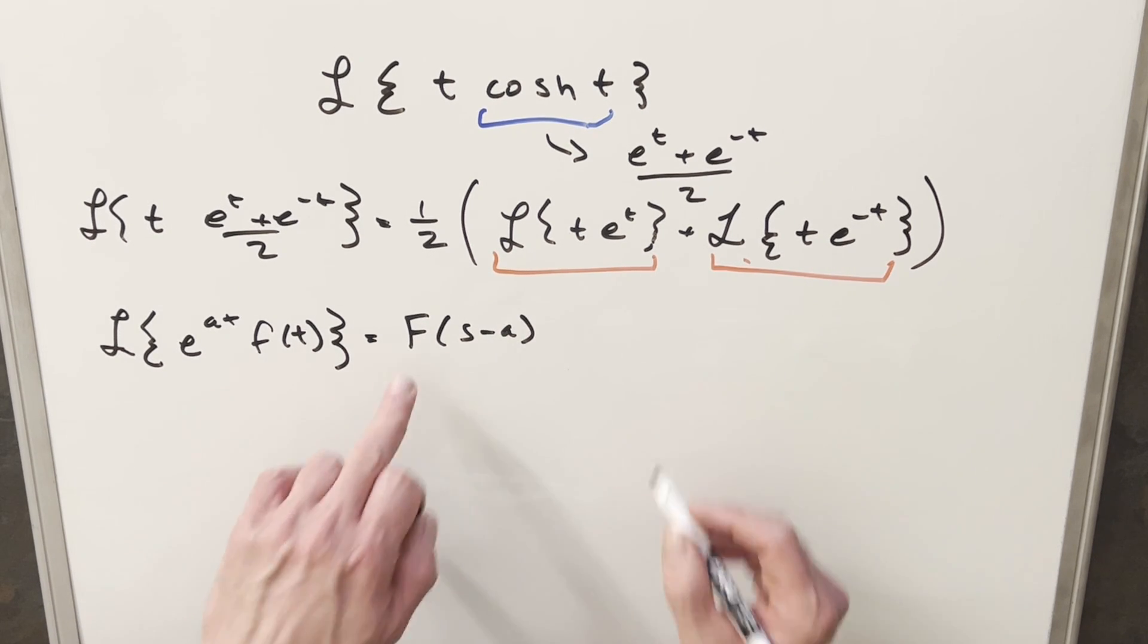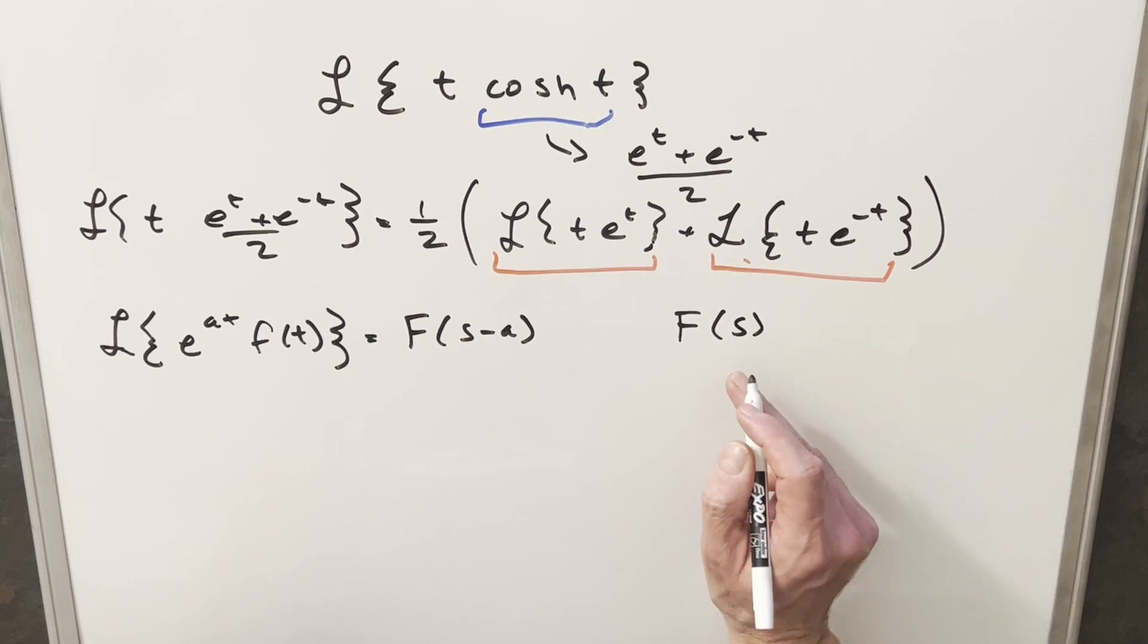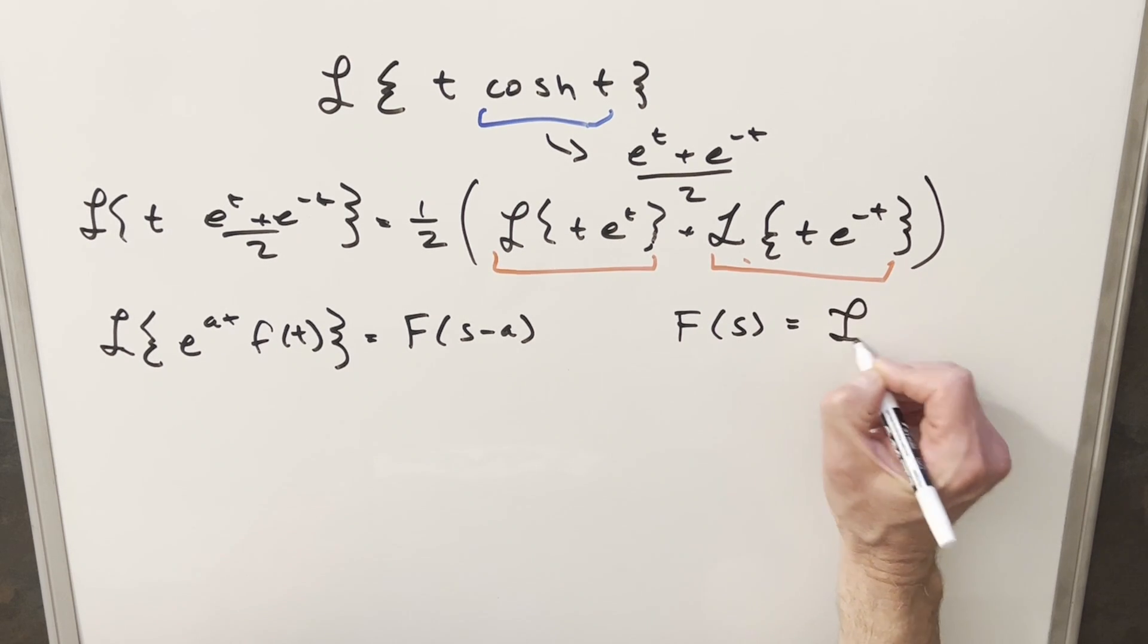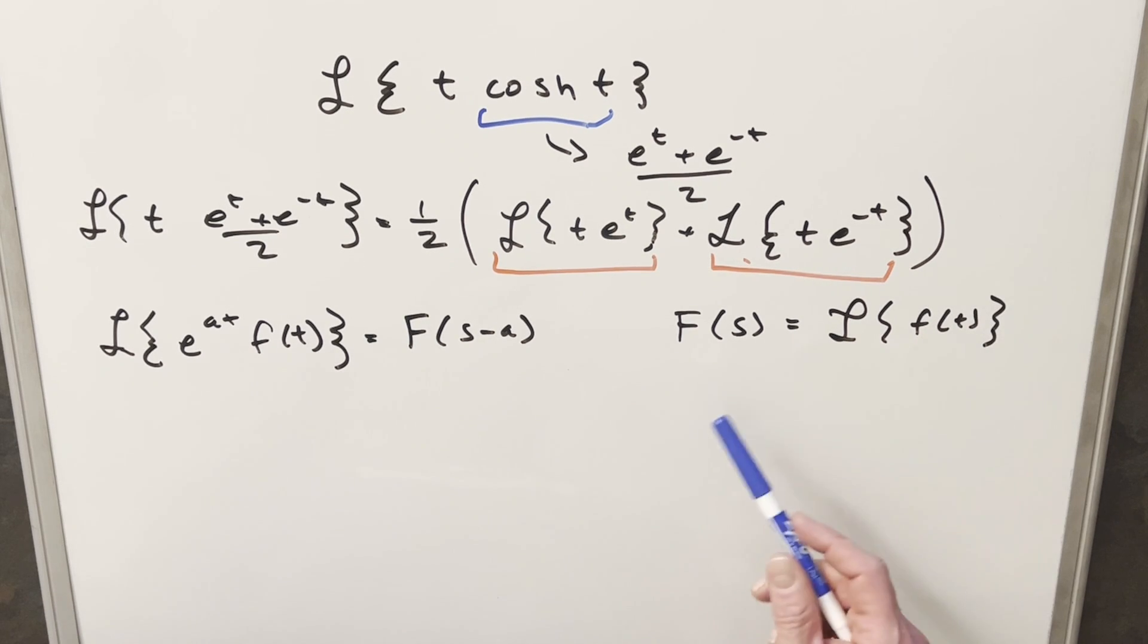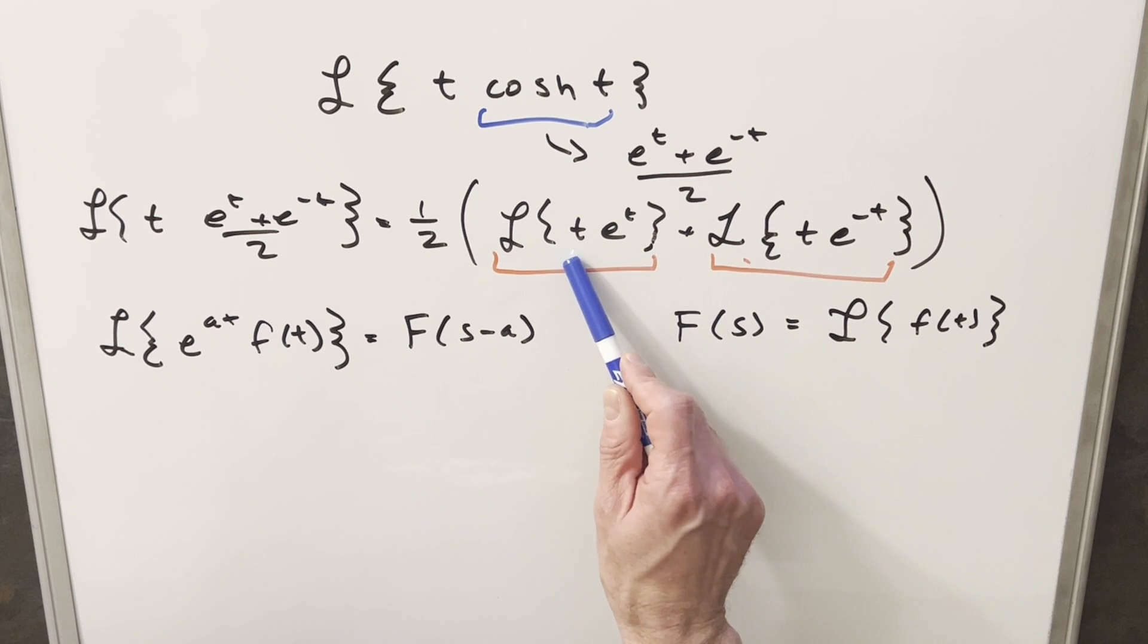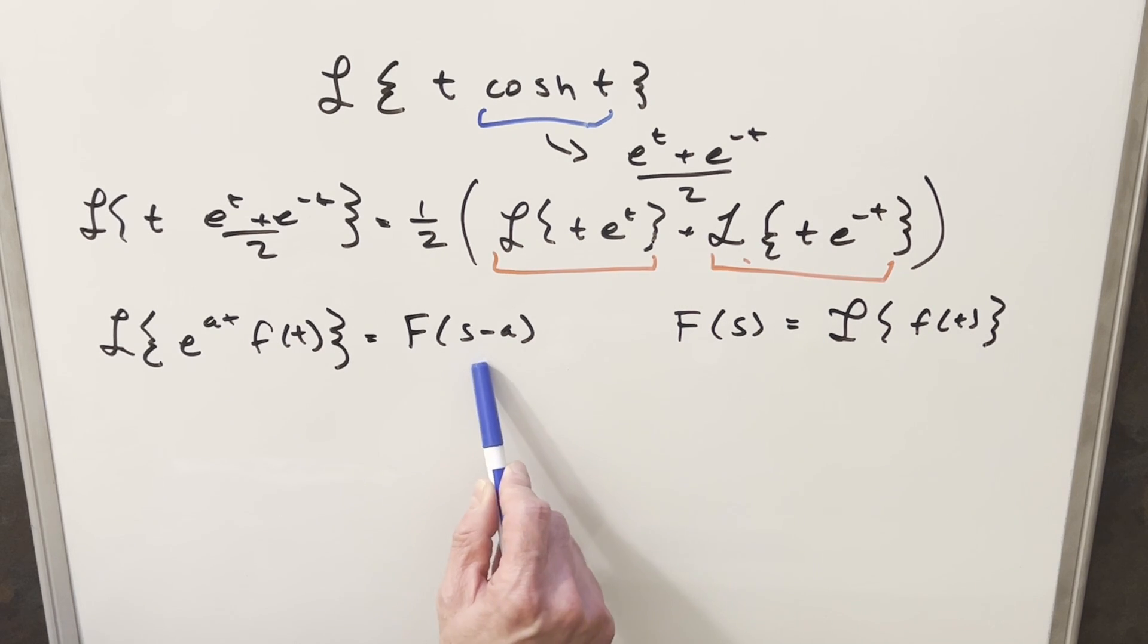The way this works is capital F of s is going to be just the Laplace transform of f of t. So what this is telling us, if we can find the Laplace transform of f of t, in both these cases our f of t is just going to be t, then we can just plug in s minus a into that function that we find.